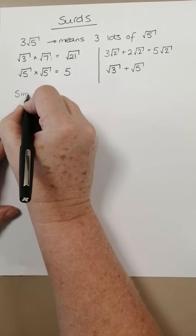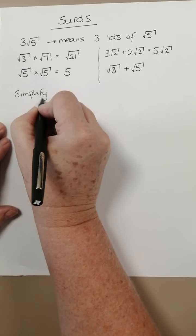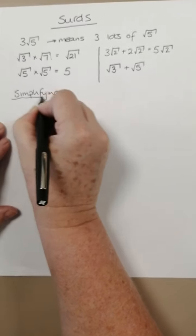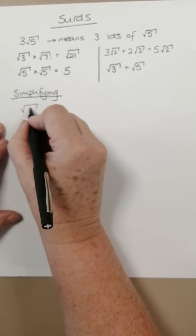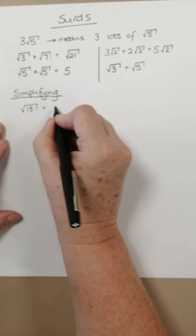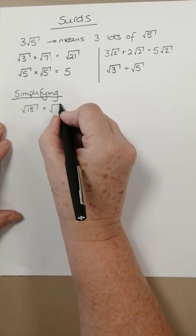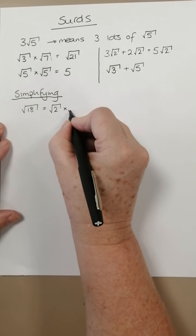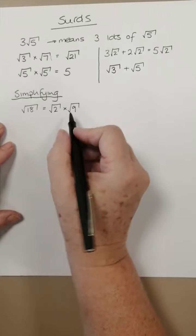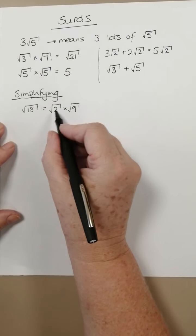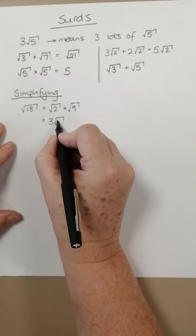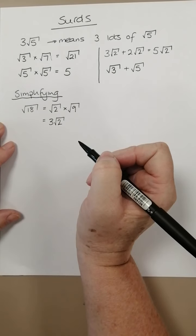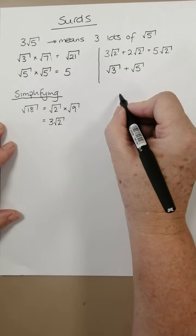In terms of simplifying surds, there are two ways to do this. So let's have a look at the square root of 18 first of all, and we could write that as the square root of 2 times the square root of 9. The square root of 9 is 3, so this is 3 lots of root 2, so we can simplify that to write 3 lots of root 2.